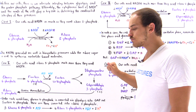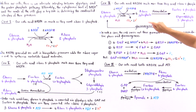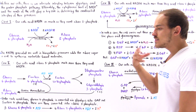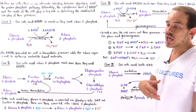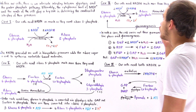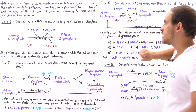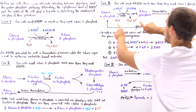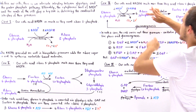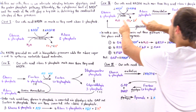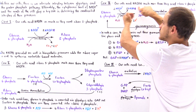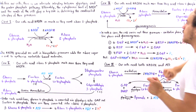Now let's move on to case 3. Here our cells need NADPH much more than they need ribose-5-phosphate. A cell that continuously undergoes fatty acid biosynthesis — such as a fat cell — experiences this scenario. There are three individual steps. In step one, a single glucose-6-phosphate is transformed into ribose-5-phosphate via the oxidative phase of the pentose phosphate pathway, generating two NADPH molecules.